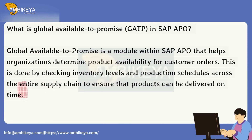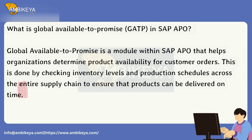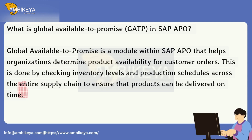What is Global Available to Promise (GATP) in SAP APO? Global Available to Promise is a module within SAP APO that helps organizations determine product availability for customer orders. This is done by checking inventory levels and production schedules across the entire supply chain to ensure that products can be delivered on time.